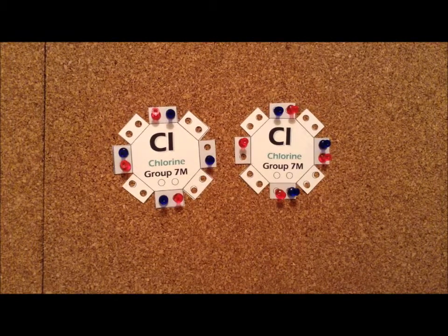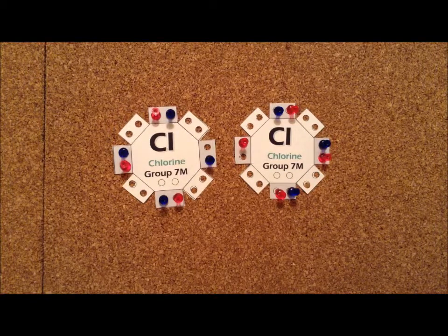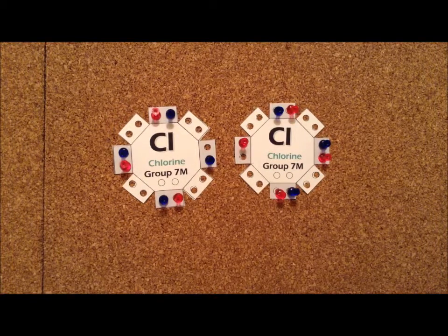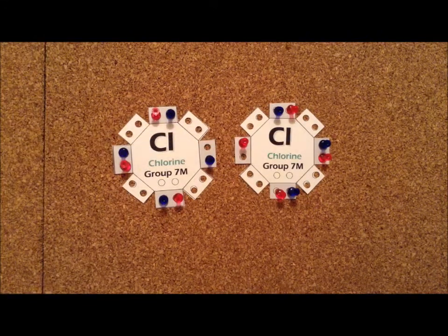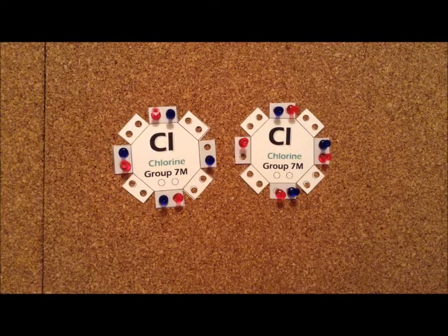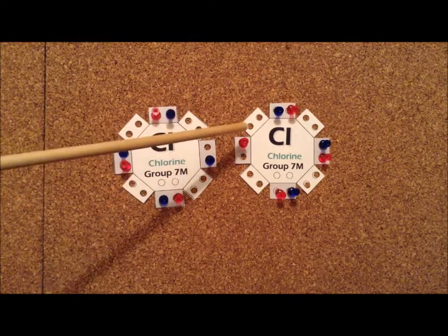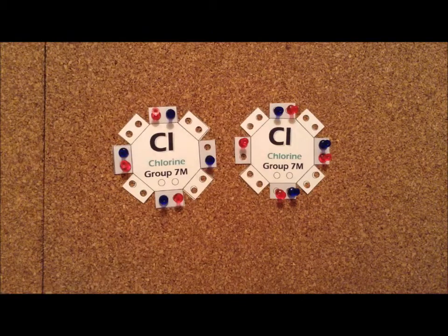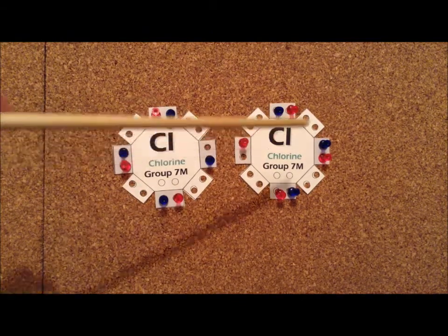When chlorine gas is exposed to visible light, the visible light has enough energy to actually break the chlorine-chlorine bond. It tends to do this homolytically, which means that the bond breaks so that one electron goes to one chlorine and the other electron goes to the other chlorine, and we're left with two seven-electron species.